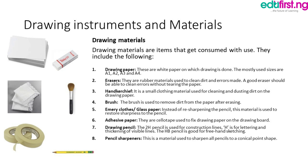Number five: abrasive cloth. Instead of resharpening the pencil, this material is used to restore sharpness to the pencil, cleaning the edge and keeping a sharp edge during construction. Number six: adhesive paper tape. These are adhesive paper strips used for fixing the drawing paper on the drawing board instead of using pins. Number seven: pencil sharpener. This is a material used to sharpen a pencil to a conical point shape that is good for drawing.